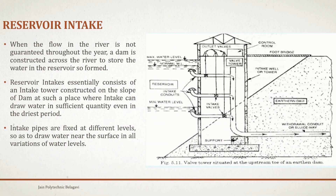Next we have the third type: reservoir intake. When the flow in the river is not guaranteed throughout the year, a dam is constructed across the river to store water in the reservoir so formed. Reservoir intakes essentially consist of an intake tower constructed on the slope of the dam at a place where the intake can draw water in sufficient quantity even in the driest period.